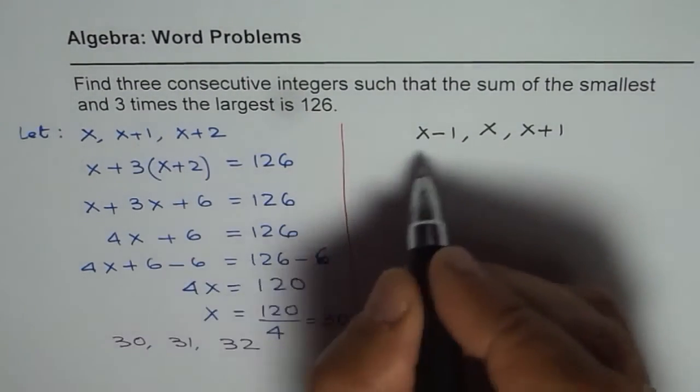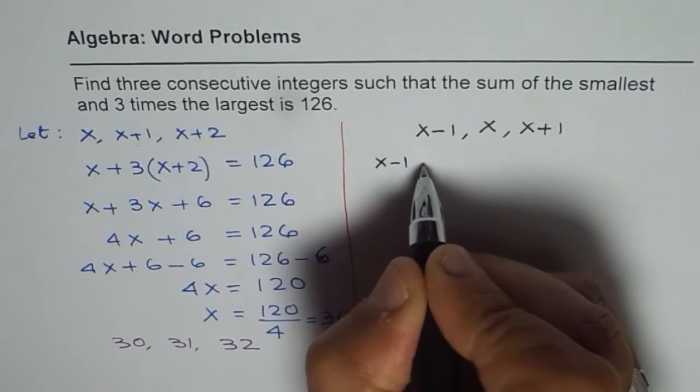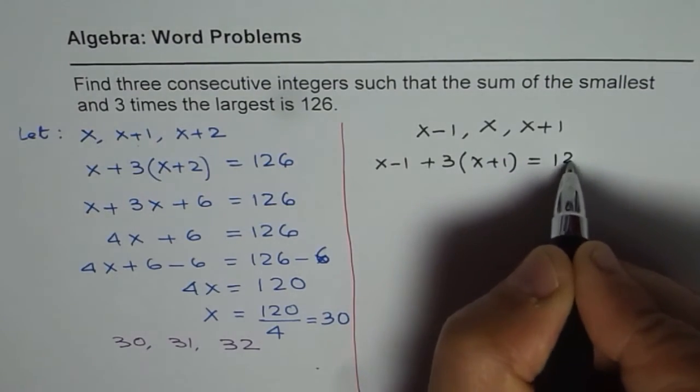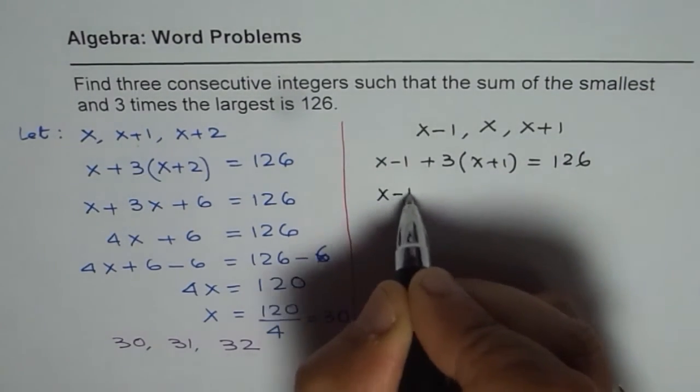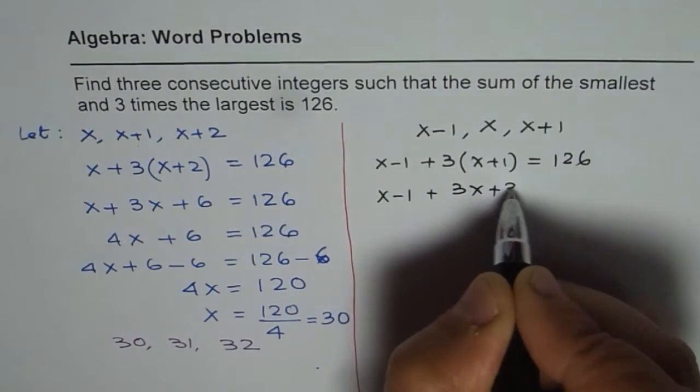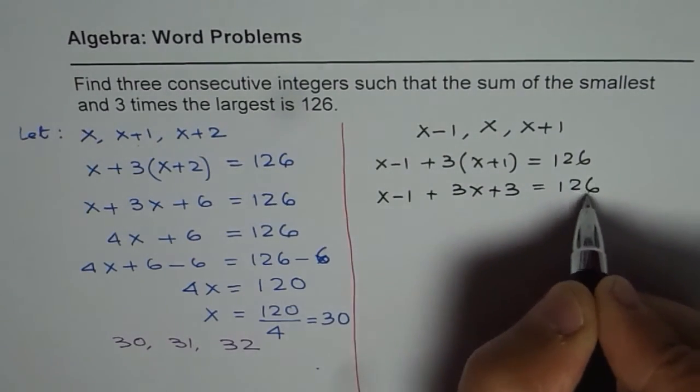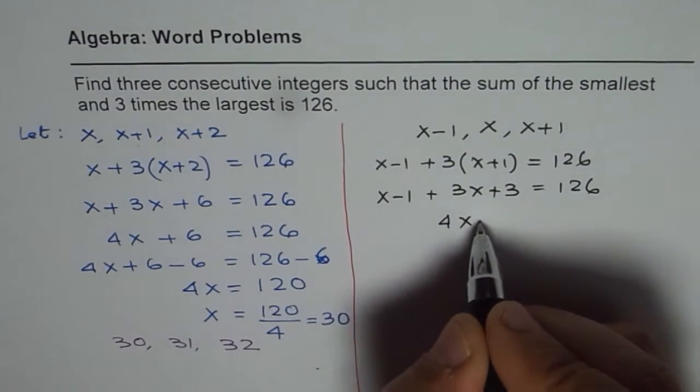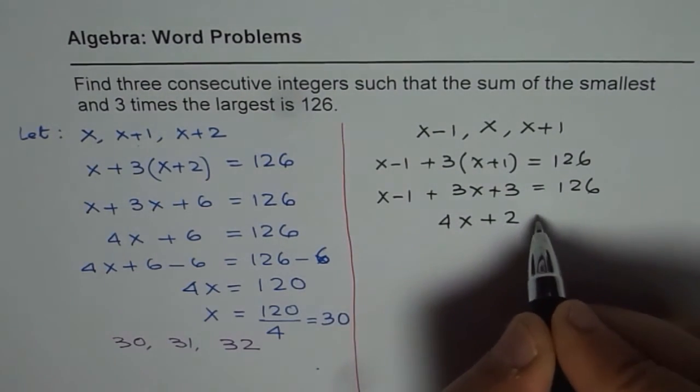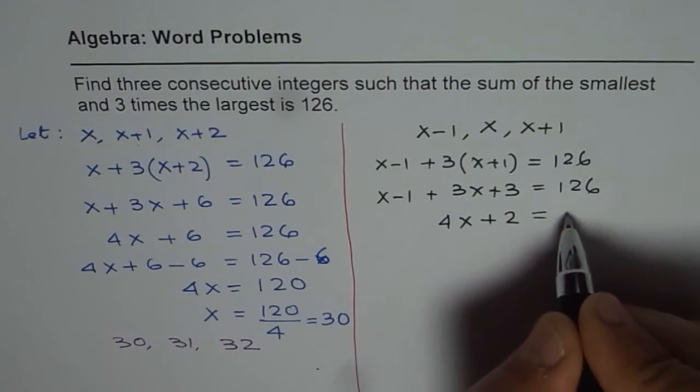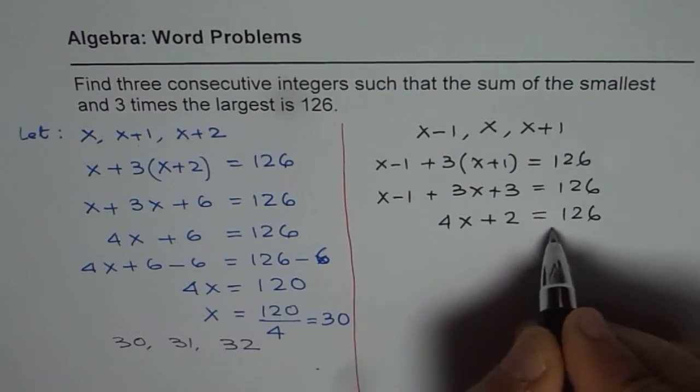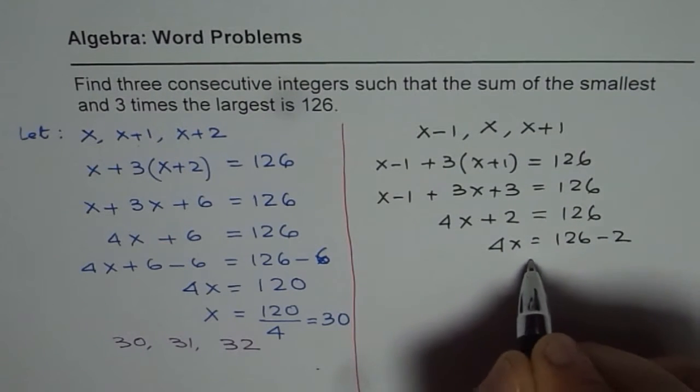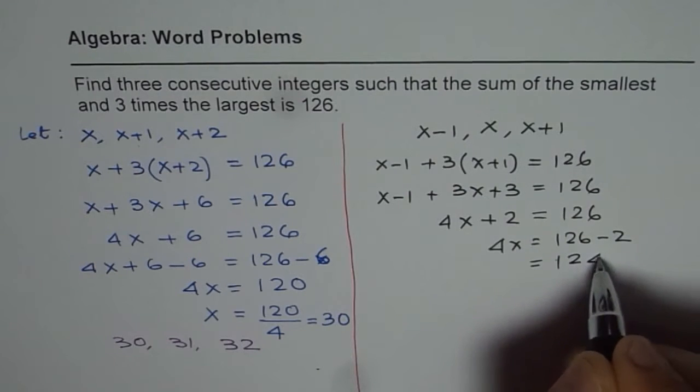So the smallest is x minus 1 plus 3 times the largest which is x plus 1 equals 126. So we have x minus 1, using distributive property is 3x plus 3 equals 126. So 3x plus x is indeed 4x and 3 minus 1 is 2. So we get 4x plus 2 equals 126 and then we can take away 2.